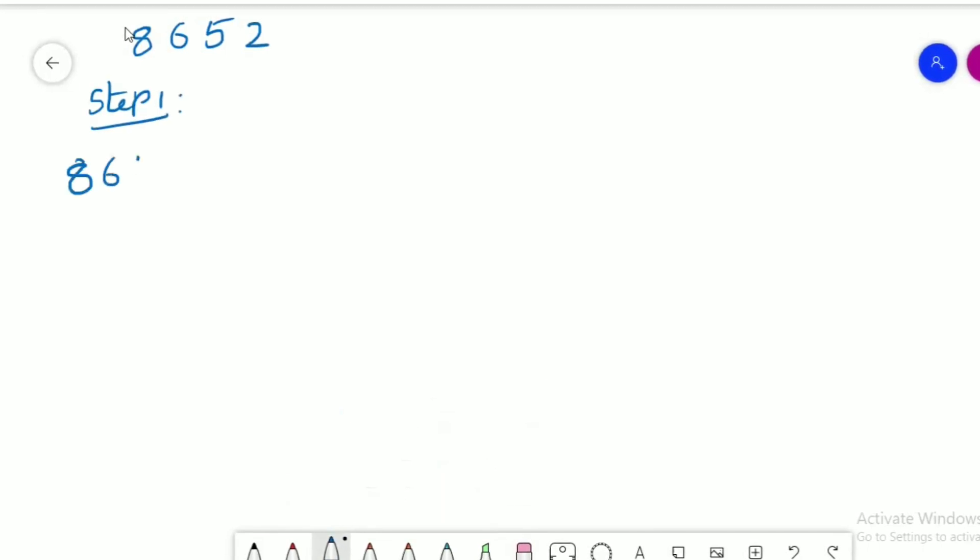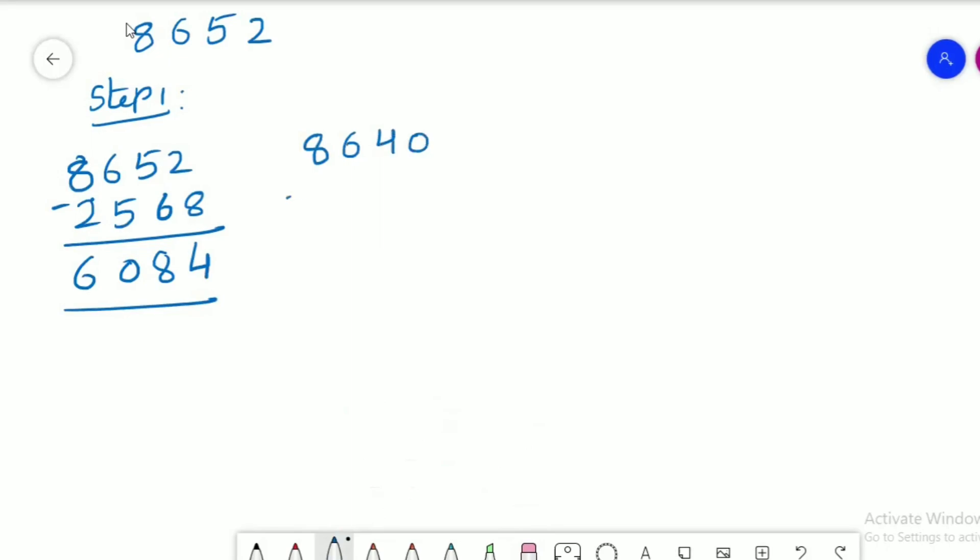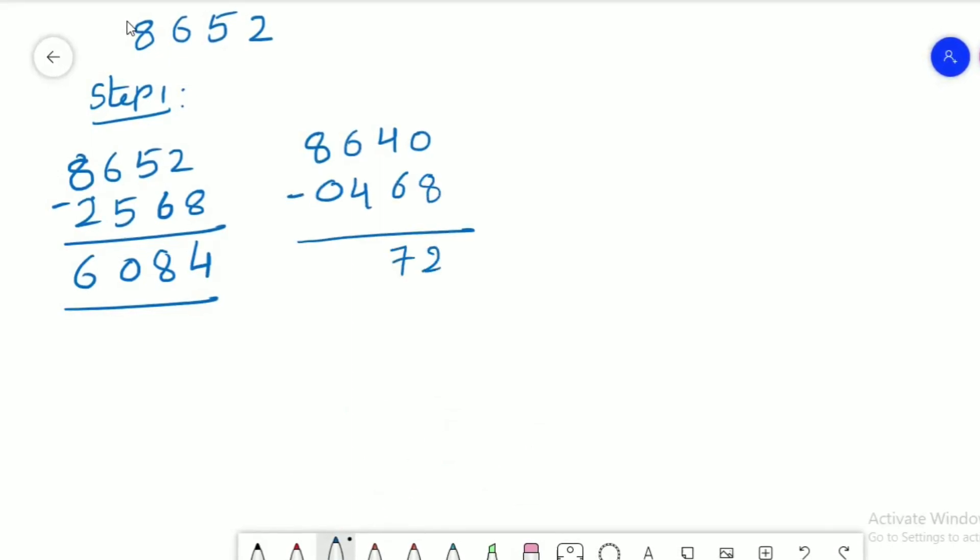Now I am repeating the same process. In the first step, 6084 is the answer. Again, I already arranged those digits. In step two, 8172.